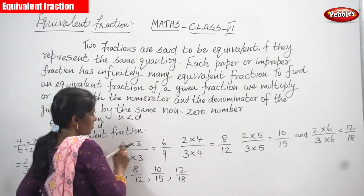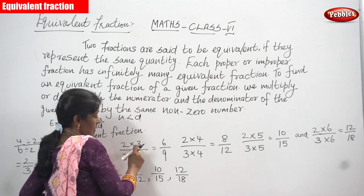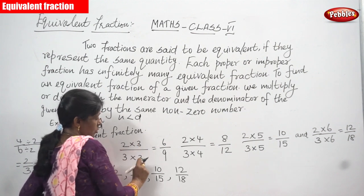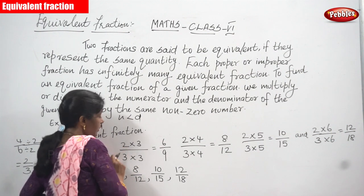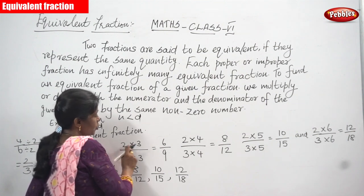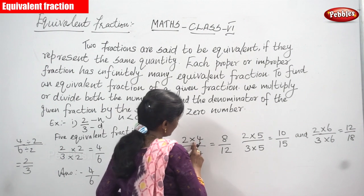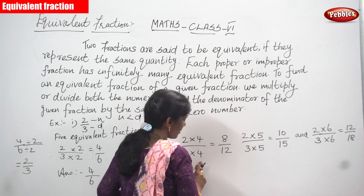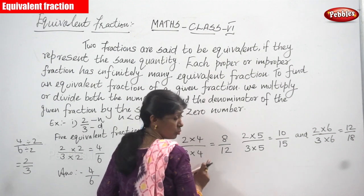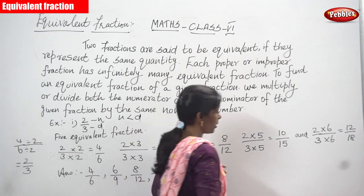Now 2 by 3 is multiplied by 3. So 2 into 3 gives 6 and 3 into 3 gives 9, so we get 6 by 9. Then 2 by 3 is multiplied by 4: numerator multiplied by 4 and denominator also multiplied by 4. So 2 into 4 gives 8 and 3 into 4 gives 12, giving us 8 by 12.